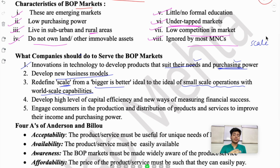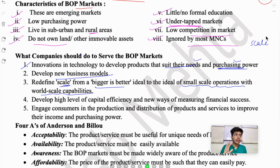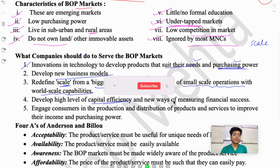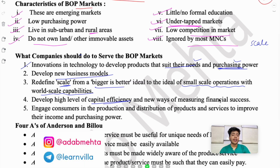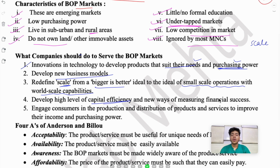Usually we think scale means the bigger the business operation the better, even if the market is small. But Prahalad's redefinition says scale means that even if you work on a small scale, the capability should be world-scale — meaning there is potential to capture a very large market. After that, develop a high level of capital efficiency and new ways of measuring financial success. Your machines must be efficient enough to produce the product cheaply; otherwise, you'll make it expensive and have to sell it cheap, running at a loss.